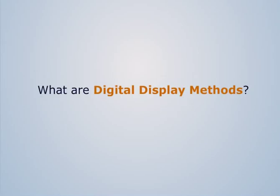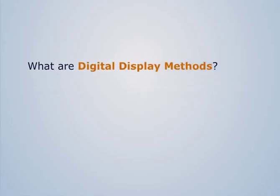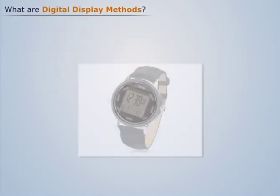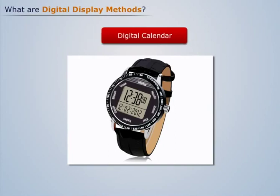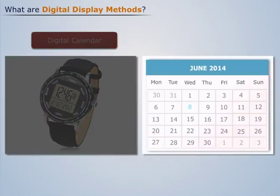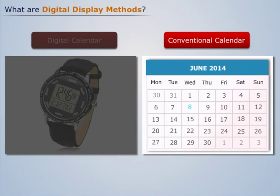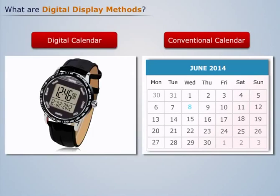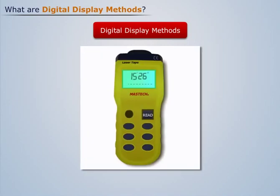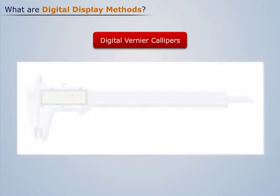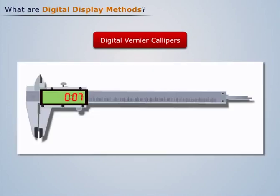What are digital display methods? We all have seen the digital calendars and clocks that are now being used in place of conventional calendars. Similarly, nowadays digital display methods are used for measurement. In digital measurements, the output is the value of the measured quantity in decimal digits.